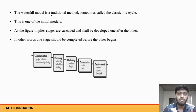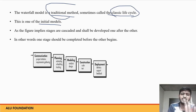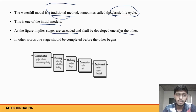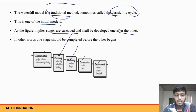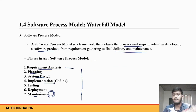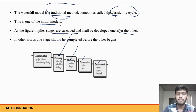The waterfall model is a traditional method, sometimes called a classic life cycle. It is one of the initial and simplest models. As the figure implies, stages are cascaded and shall be deployed one after another — until communication is complete we don't go to planning, until planning is complete we don't go to modeling, and so on through construction and deployment. In other words, one step should be completed before the other begins.